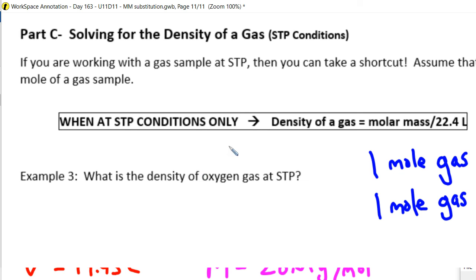So if you want to find the density of oxygen gas at STP, the key is we're at STP. So assume that you have one mole, and so the mass will be the molar mass. So if you have one mole of oxygen, 16 times 2, like O2, and oxygen is diatomic.